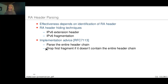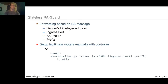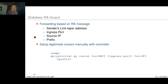The second advice is to drop the first fragment if it doesn't contain the entire header chain. In the stateless mode, router advertisement messages are forwarded based on the sender's link-layer address, the ingress port, the source IP, and the prefix. These fields are matched against a table of legitimate entries, which is set up manually by an administrator using the controller interface. Basically, it works like a rule-based firewall.